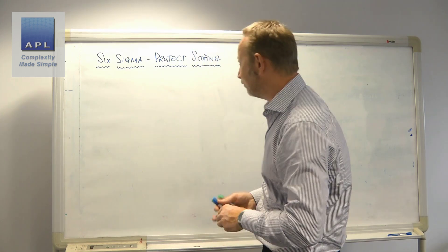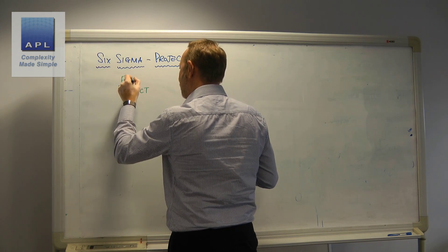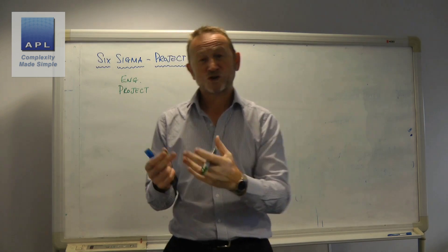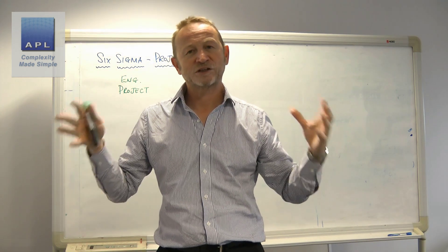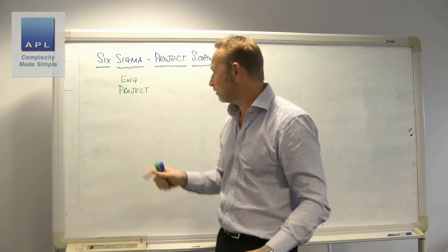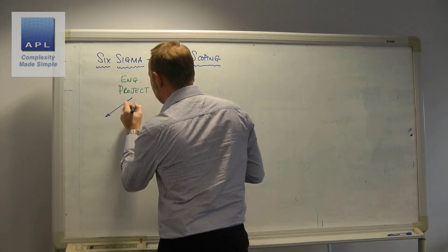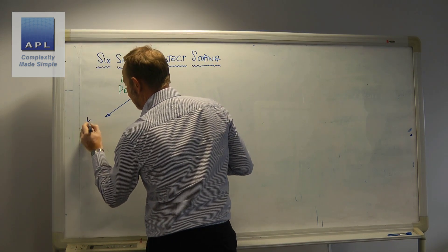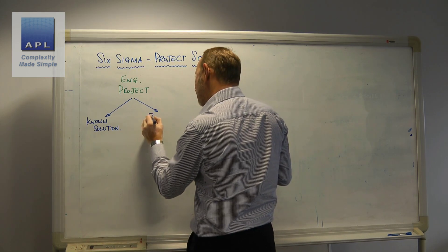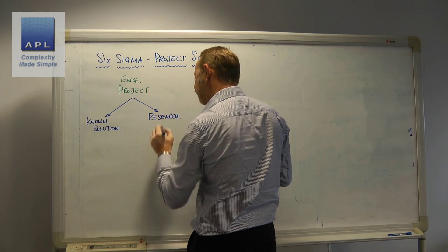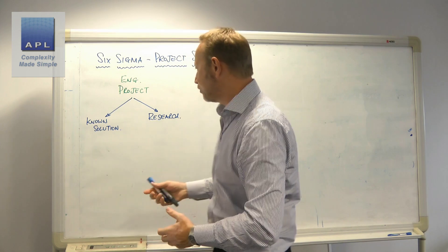Let's look at the types of project scoping we could have. I'm going to call this an engineering project, because essentially a Six Sigma project is often world-class technical problem-solving — that's what it should be used for, that's its strength. There are two types of engineering project: one is where the solution is known, and the other is research.